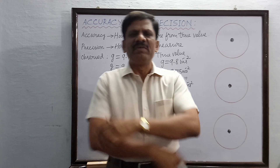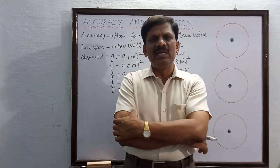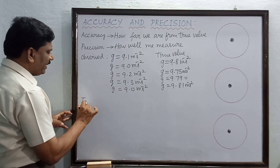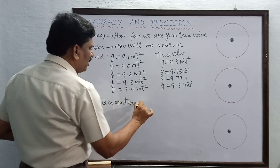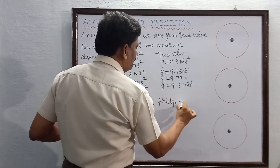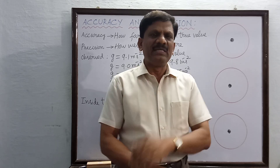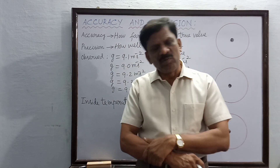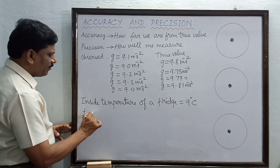Let's take another example — a refrigerator. The inner portion of a refrigerator is at a lower temperature than the surroundings. Say the inside temperature of the fridge is 9 degrees Celsius — this is the true value. Now I am going to measure that temperature using a thermometer.